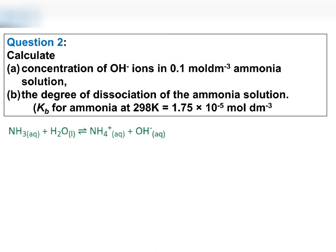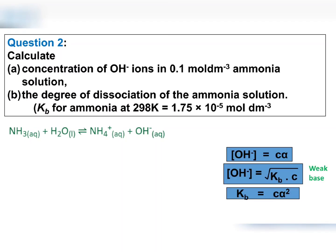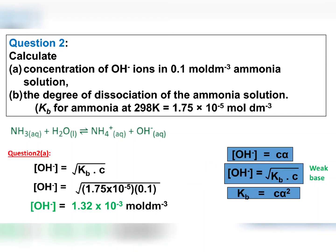Next, question 2a. We need to determine the concentration of hydrogen ions in an ammonia solution. It is a weak base. Therefore, we can use this formula directly to determine the concentration of hydrogen ions. The concentration of hydrogen ions is equal to 1.32 × 10⁻³.